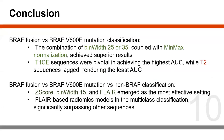In conclusion, BRAF fusion versus BRAF V600E mutation classification can be done precisely with the combination of bin width of 25 or 35 with min-max normalization. T1 contrast enhanced sequences were the best among the four sequences, and T2 was the worst. For multi-class classification, Z-score coupled with bin width of 15 and FLAIR sequence emerged as the most effective setting, and FLAIR-based radiomics models significantly surpassed other sequences.